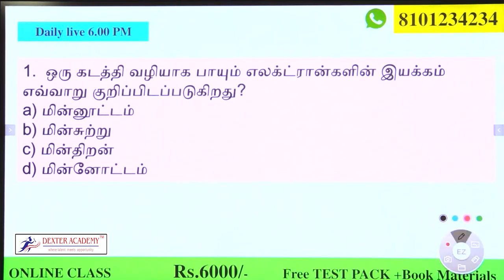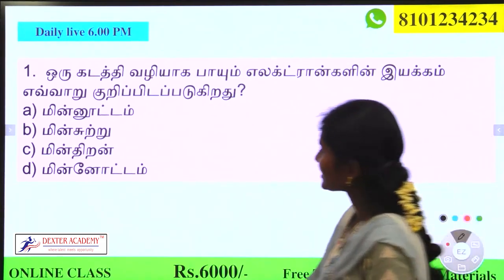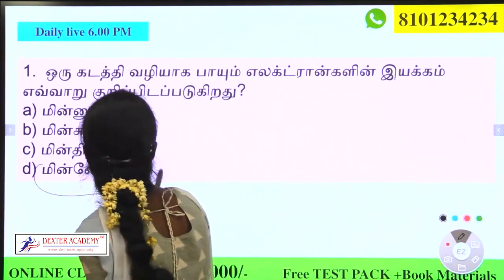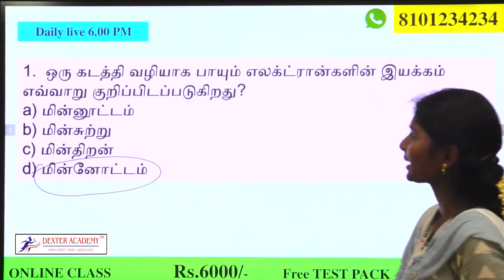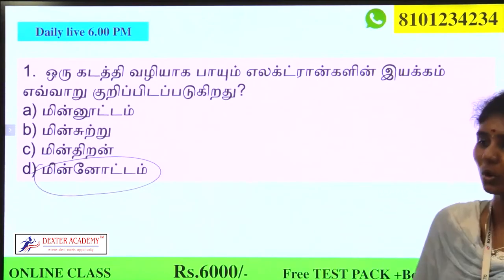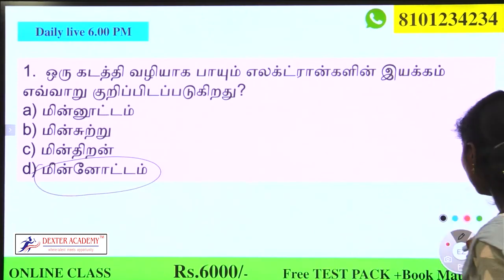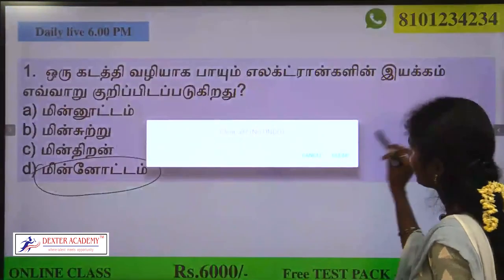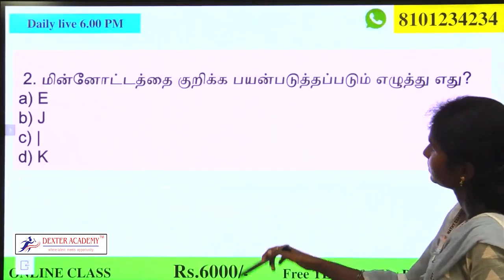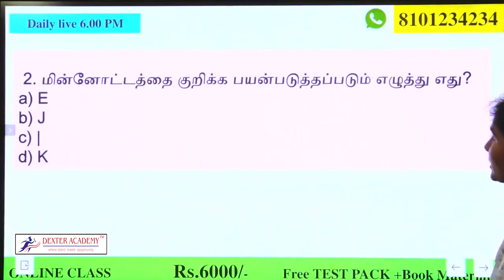Option D. Minnotown is the answer. So if we see an electron, Minnotown is the name of the electron. So Option D. Minnotown, so it is 90% of the electron.